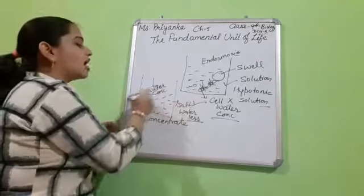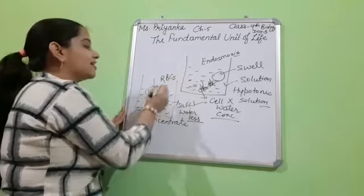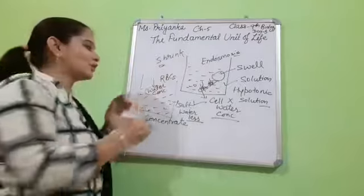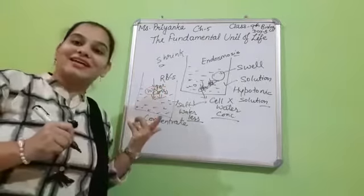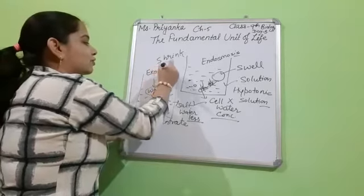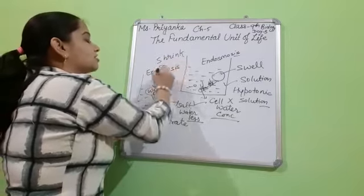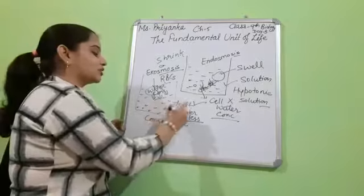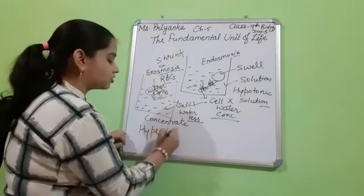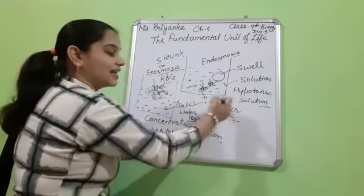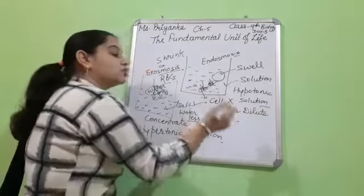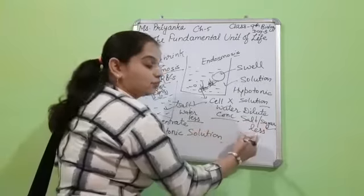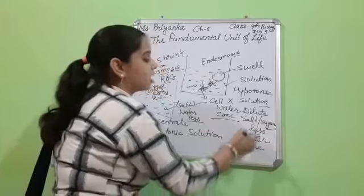I am putting the RBC into a salt solution that is more concentrated. So what happens with the RBC? The size of the RBC decreases — it will shrink. This type of solution is called hypertonic solution. In a hypertonic solution, the amount of salt or sugar is more and water is less.